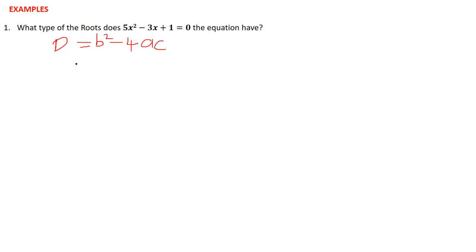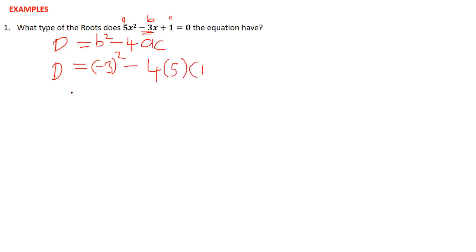The discriminant is equal to b which is negative 3, because our a is 5, b is negative 3, and c is 1. So we get negative 3 squared minus 4 times 5 times 1. That gives us 9 minus 4 times 5, which is 20 minus 1, giving us 20.